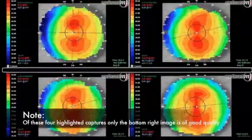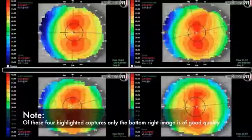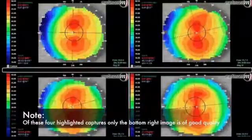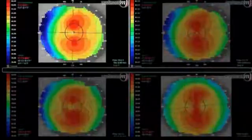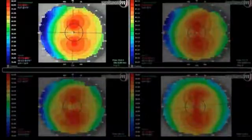If we look at the top left map, we see the blue colour is on the nasal side of the left eye. This means that the peripheral rings are not centralised within the limbus.